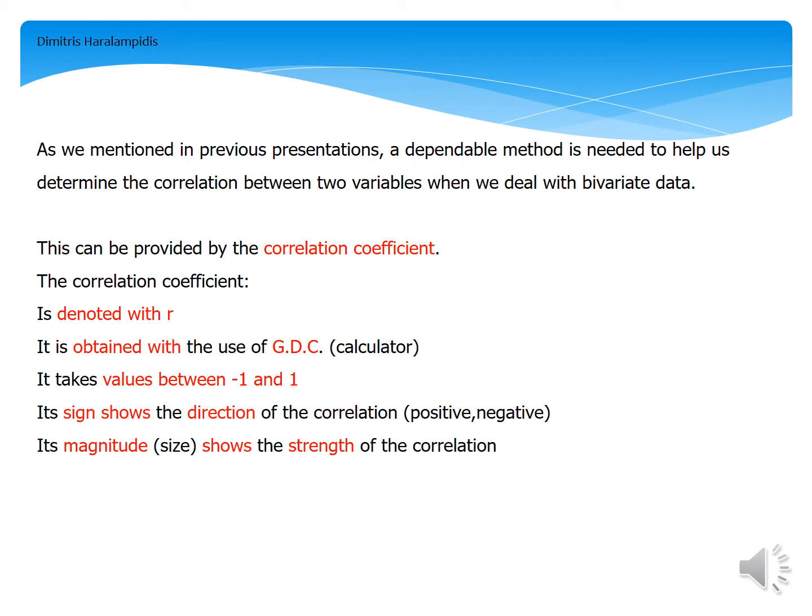As we mentioned in previous presentations, a dependable method is needed to help us determine the correlation between two variables when we deal with bivariate data. This can be provided by the correlation coefficient.